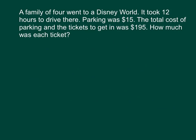The next problem: a family of four went to Disney World. It took 12 hours to drive there. Parking was $15. The total cost of parking and the tickets to get in was $195. How much was each ticket? We set x equals the price of each ticket. A family of four probably bought four tickets. It took 12 hours to drive there — but since the problem doesn't ask for gas or taxi fare, we don't need that information. So parking plus tickets equals $195.